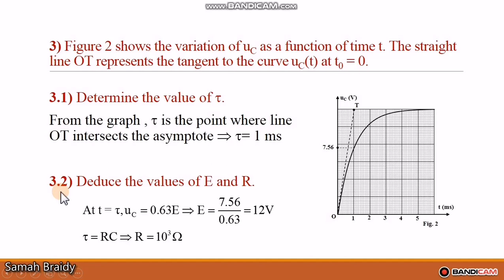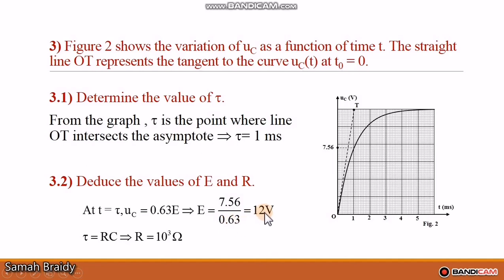Part 3.2: deduce the values of E and R. At t equal to τ, UC equals 0.63·E. From the graph, UC at t equal to τ reads 7.56 V. Therefore E equals 7.56 divided by 0.63, which gives E equal to 12 volts. Since τ equals RC and τ equals 1 ms, C equals 1 mF, we get R equals τ/C equals 1×10⁻³ divided by 1×10⁻³ equal to 1×10³ ohms, so R equals 1000 Ω.